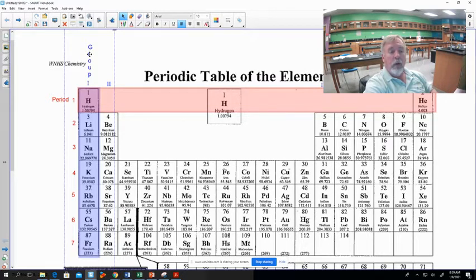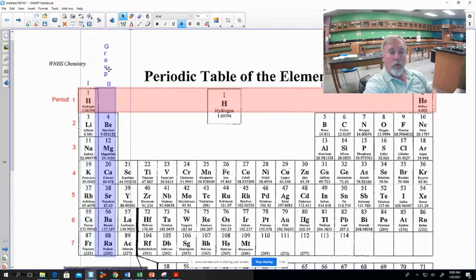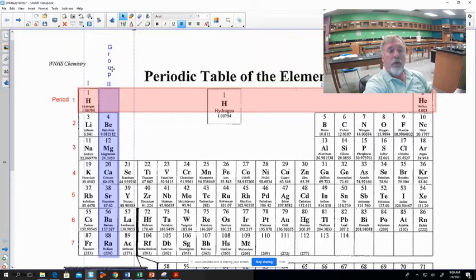I've got them labeled here in blue, and we label these with Roman numeral I in this case. So our first column here is Roman numeral I. Now if I take my group and move it over, this is group number II, Roman numeral II.